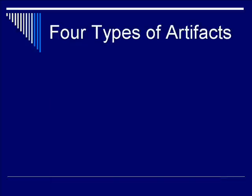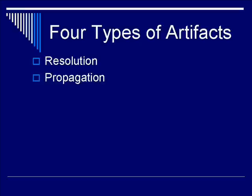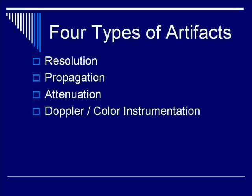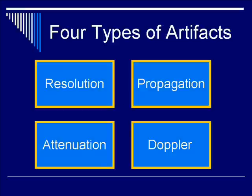Let's talk about the four types of ultrasound artifacts. Number one: resolution-related artifacts, similar to what we discussed in the transducers lecture. Second: propagation-related artifacts, which form the bulk of the artifacts in this lecture. Third: attenuation-related artifacts, which are more commonly appreciated in clinical ultrasound scanning. Fourth: Doppler and color instrumentation-related artifacts, which may be more esoteric to common users. So the four types are resolution, propagation, attenuation, and Doppler.